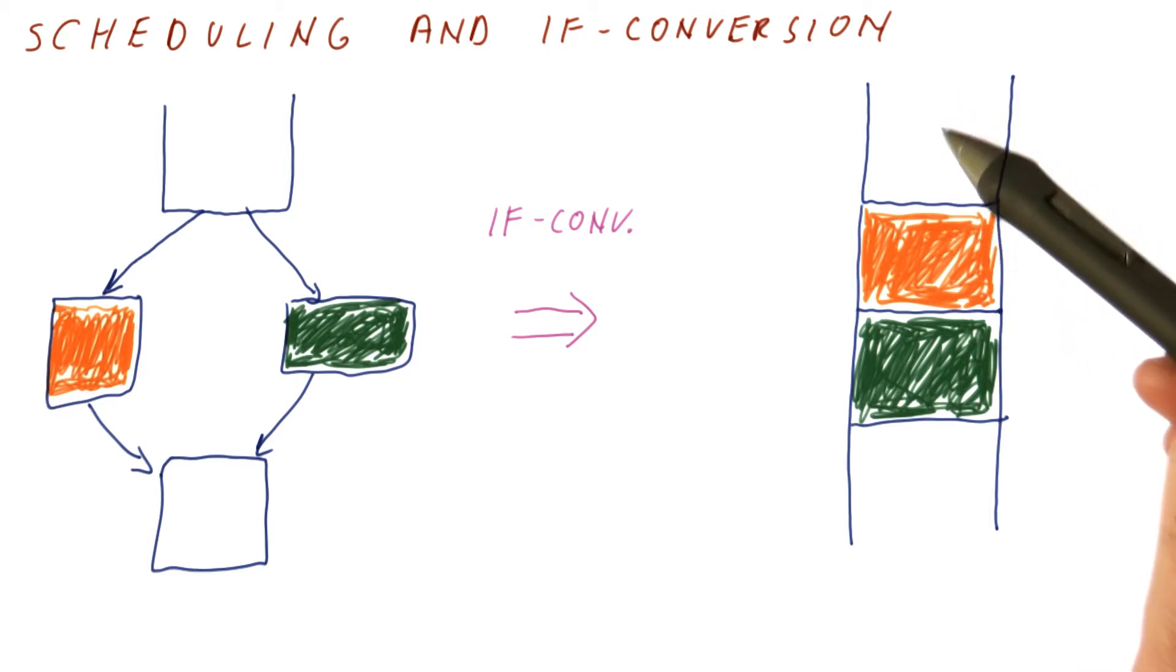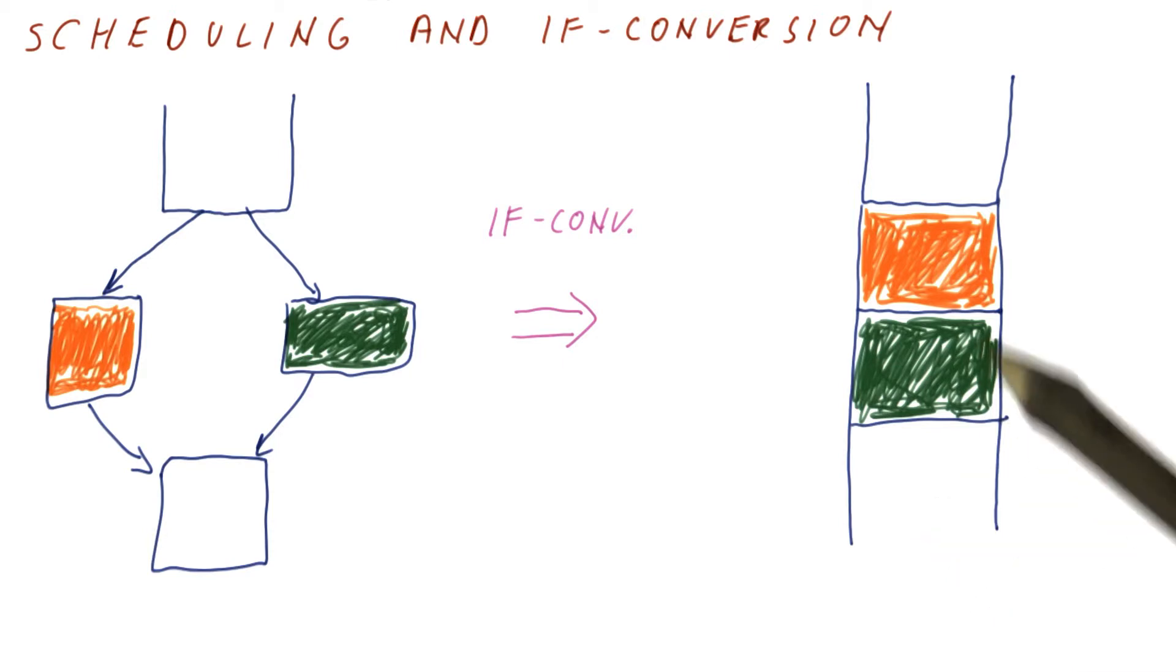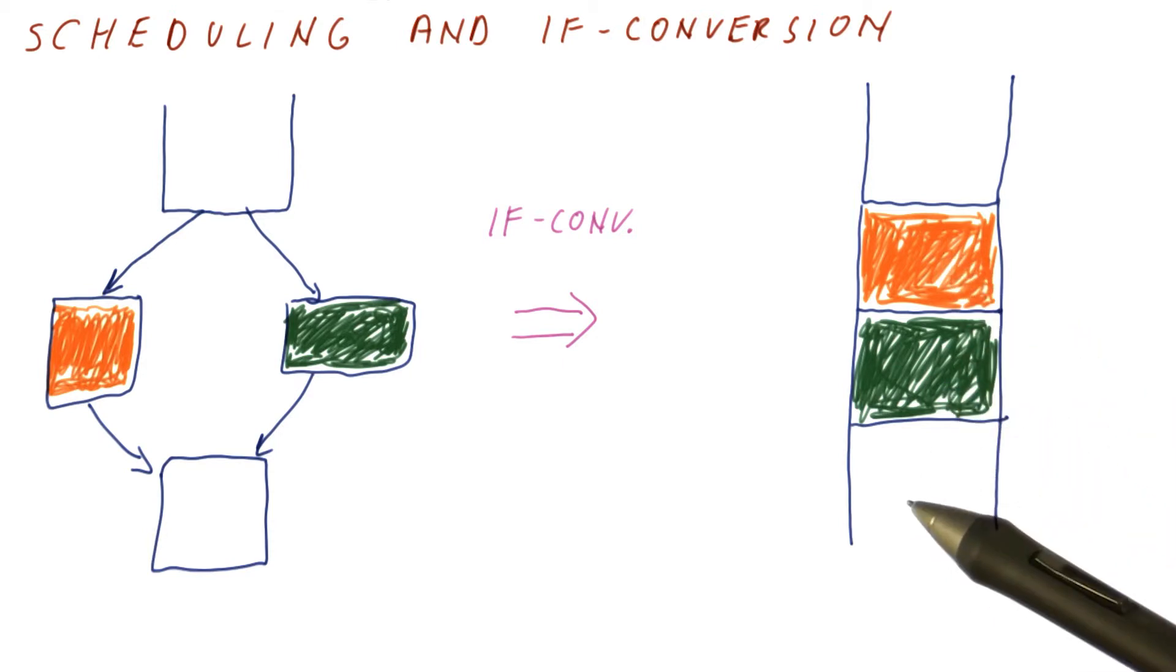And now, because this is branch-free code, and because all of these instructions really execute every time, it's just that they're predicated sometimes, we can easily take instructions from here and put them here to avoid stalls, and that's nice.